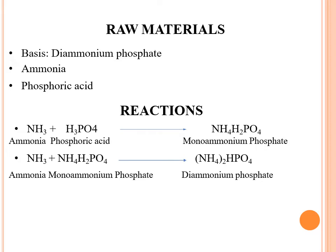The basic raw materials in the manufacturing process of ammonium phosphates are ammonia and phosphoric acid. These two are the basic raw materials used in ammonium phosphate manufacturing. The chemical reactions involved are simply neutralization reactions — ammonia neutralizes phosphoric acid, which gives ammonium phosphate as the salt product.